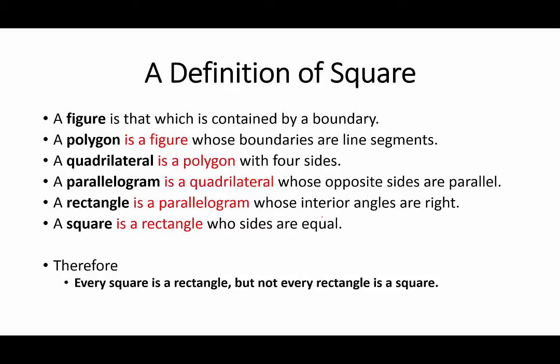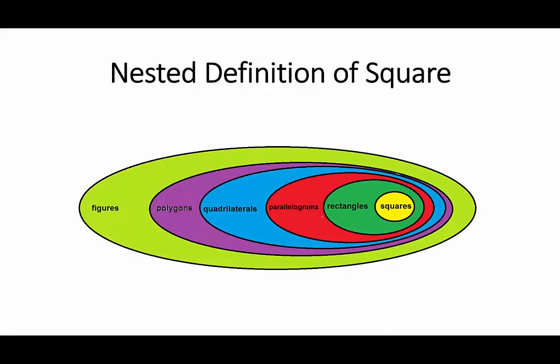Using a Venn diagram, this is what we have. Every square is a rectangle, every rectangle is a parallelogram, every parallelogram is a quadrilateral, every quadrilateral is a polygon, and every polygon is a figure.